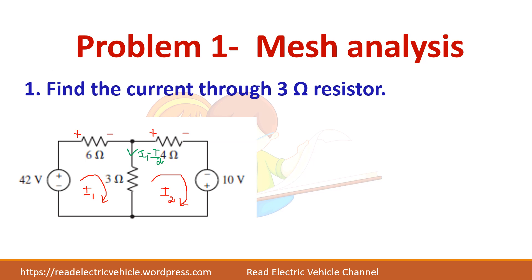Let us take Problem 1. This problem we have already solved in the previous video on Kirchhoff's Voltage Law and Current Law. The same problem is taken here, but we will solve it using Cramer's Rule. This is the circuit with two voltage sources. You have two meshes and two variables, I1 and I2. The question is to find the current through the 3-ohm resistor — I1 minus I2 will give you that current.